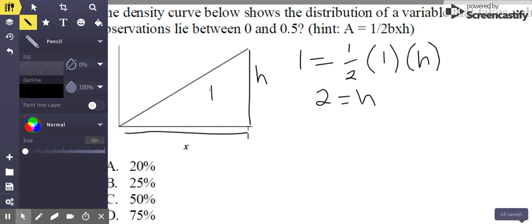Okay, so why do we care about that? This side, if this side is 2, then I can use that information to figure out what they want up here, which is the area or the proportion between 0 and 0.5. So 0.5 is halfway from 0 to 1. So I'm going to cut this triangle in half. So I want to know this proportion of the triangle.